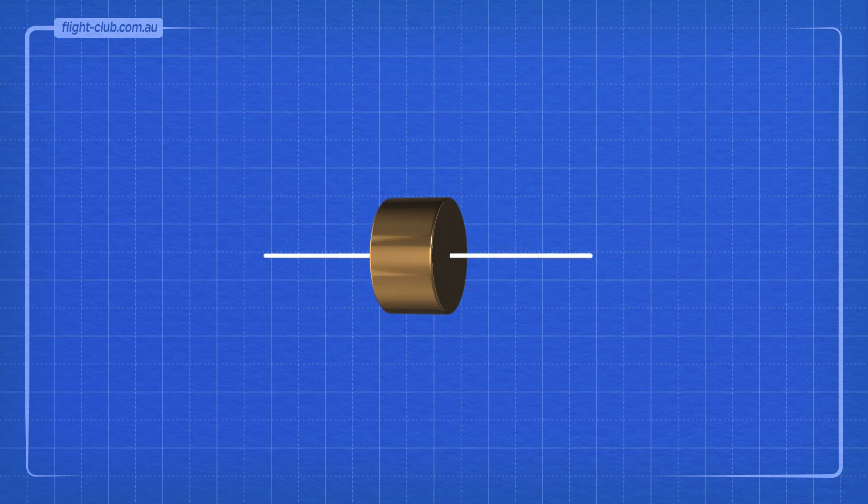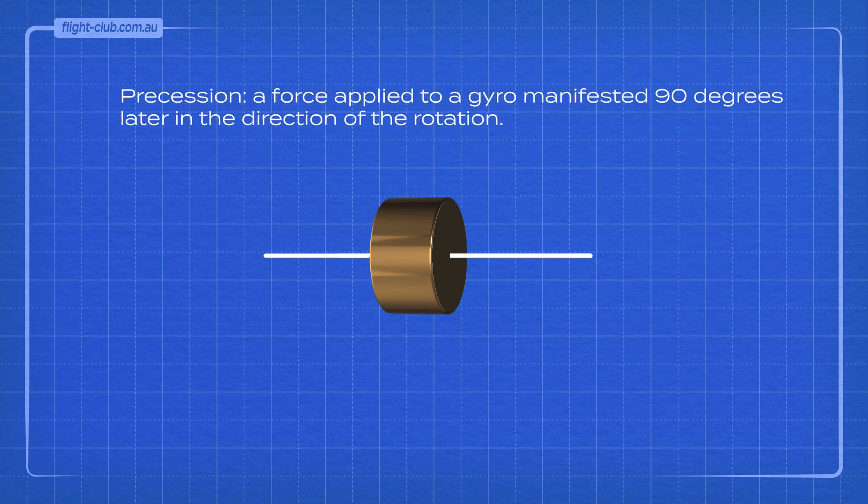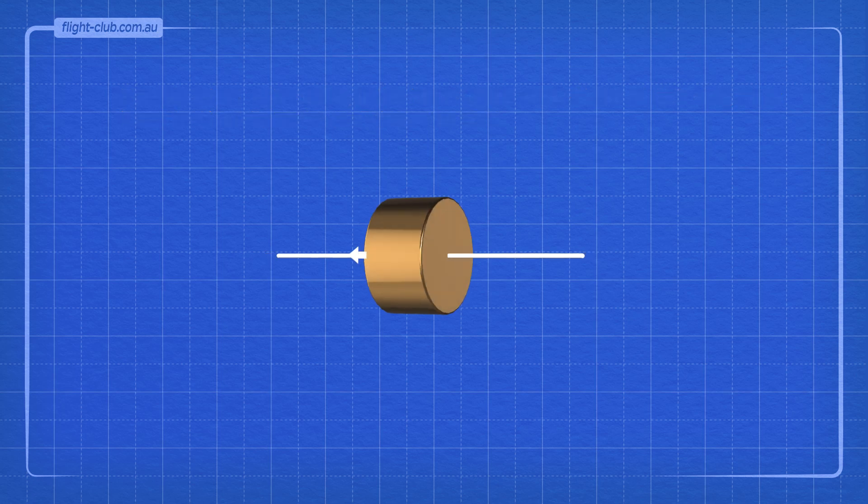The gyroscope has another very useful characteristic called gyroscopic precession. When a force is applied to the spinning gyroscope that changes its direction like this, the gyroscope responds with a force that is displaced 90 degrees to the direction of rotation, and it tilts to the side like this.